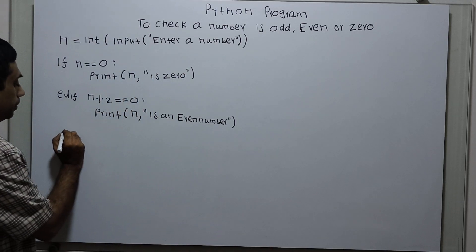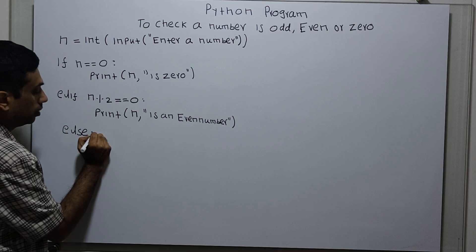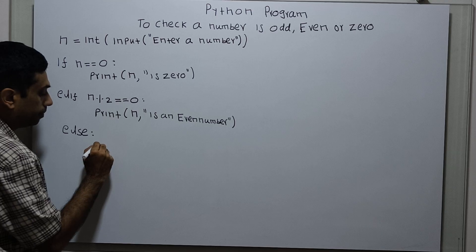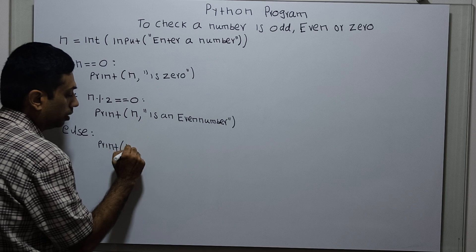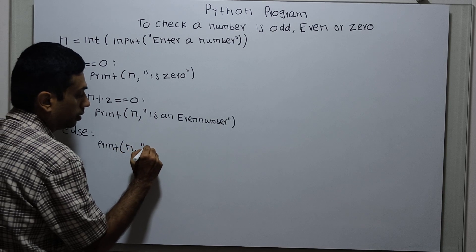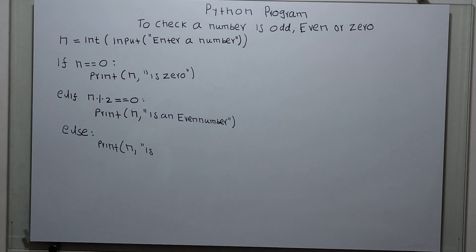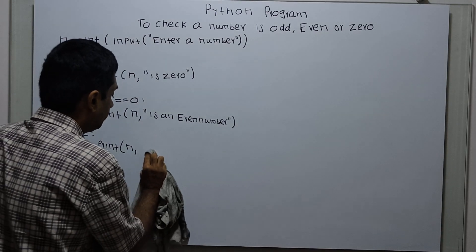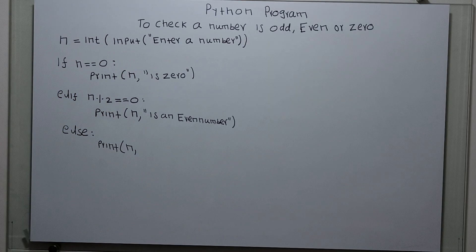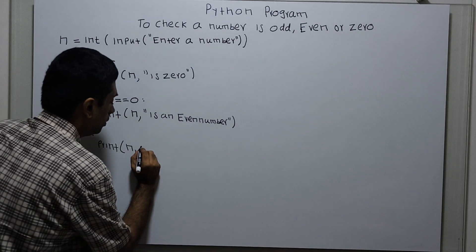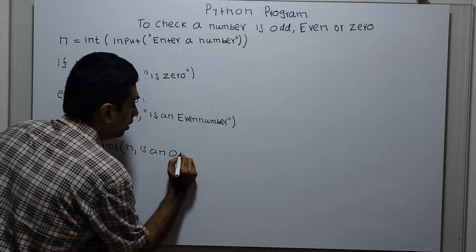I am writing else here. Under the else block, I am printing: n is an odd number.